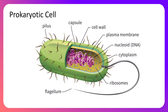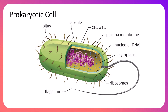It lacks a nuclear envelope or nuclear membrane. The DNA is kept safe in the nucleoid region. Around the nucleoid region is cytoplasm — the cytosol-containing fluid that fills the inside of the cell membrane — and there are free ribosomes, which the bacterial cell uses to produce proteins.